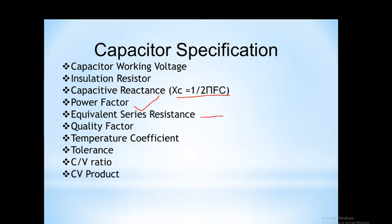The next specification is the equivalent series resistance (ESR). ESR represents the power loss taking place in a capacitor. It is possible that some energy stored across the capacitor may be leaked. ESR is defined as the ratio of reactance to the quality factor. Capacitors with low ESR are used in high current performance applications.